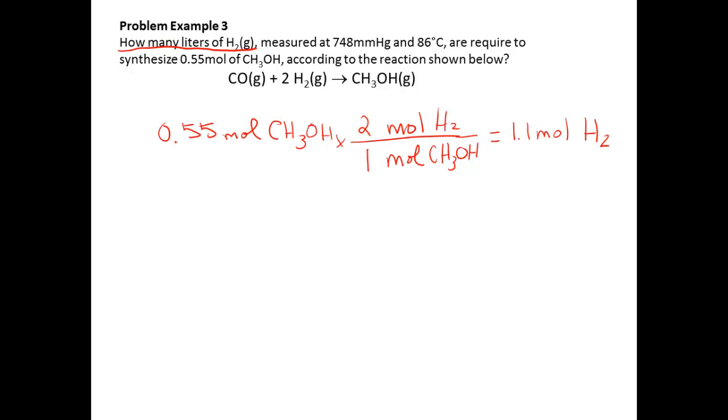Now, our next step is to go between moles and liters of a gas. We are either going to be using our 22.4 or the PV equals nRT. Are you given STP? 748 mmHg and 86 degrees Celsius are not STP, unfortunately. So what we're going to do is we're going to be using PV equals nRT.